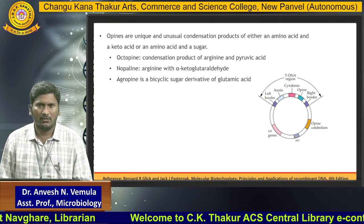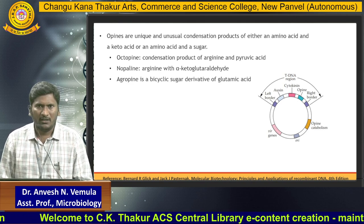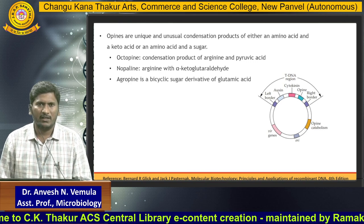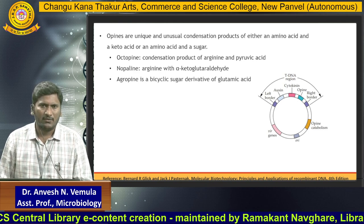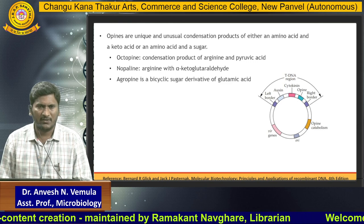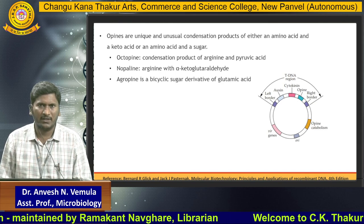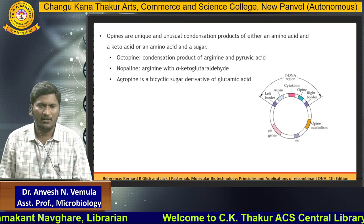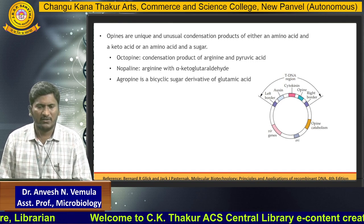The virulence genes are essentially required after integration of the Ti plasmid into the plant chromosome. Opine catabolism genes are essential for the survival of Agrobacterium tumefaciens in plant cells, as the bacterium needs to utilize carbon sources obtained in the form of opines. These opines are synthesized by opine synthesis genes of the T-DNA and catabolized by opine catabolism genes present in the Ti region of Agrobacterium tumefaciens.